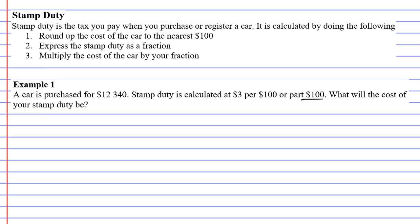Now a lot of people get confused when they hear this 'or part $100.' To help you understand that, what we'll do is we'll look at an amount, let's say $500. Now $500 is represented by five lots of $100. Okay, now let's say I had $520.